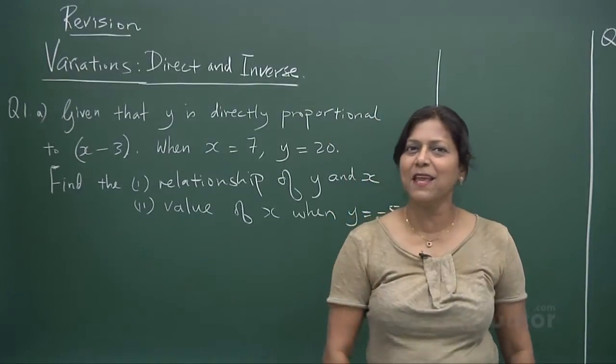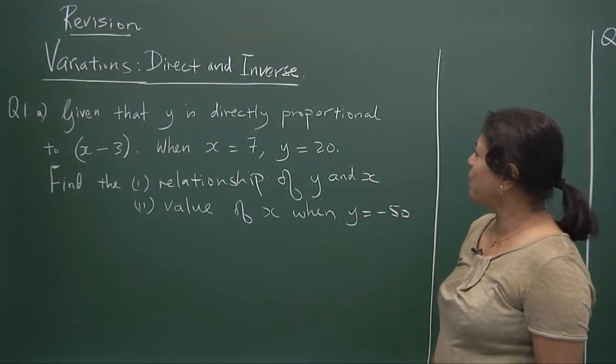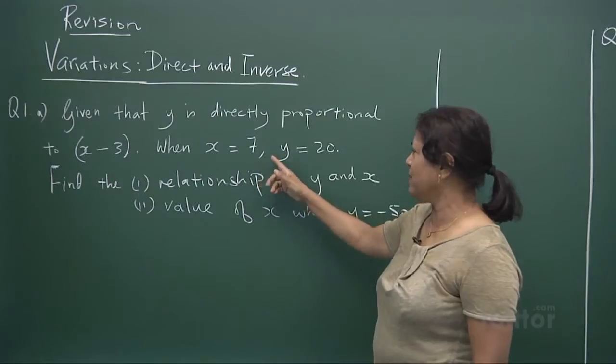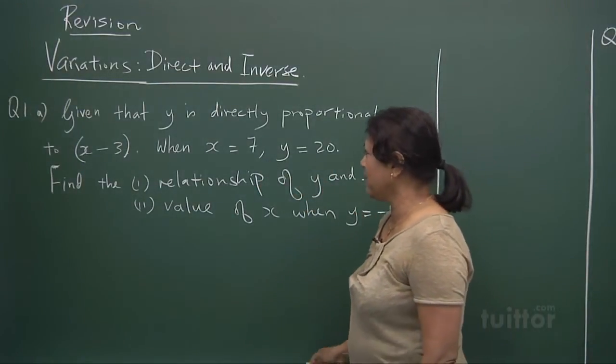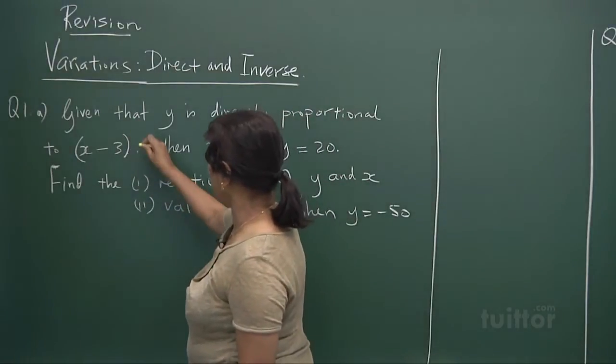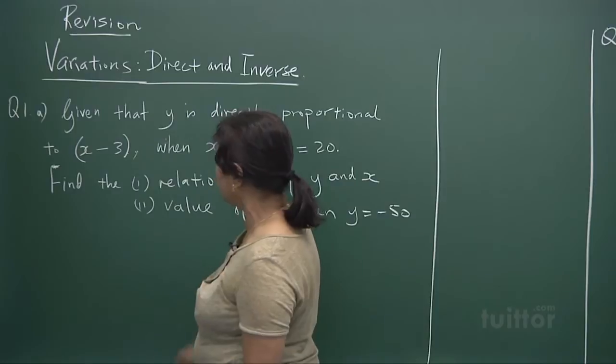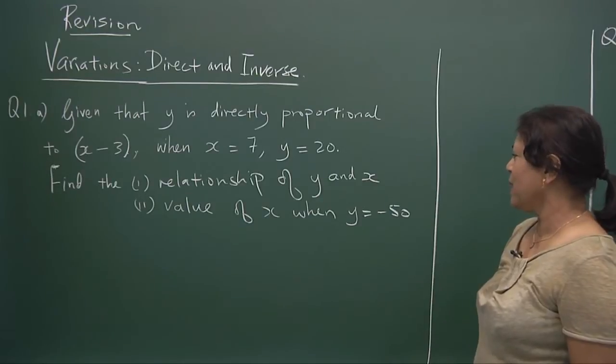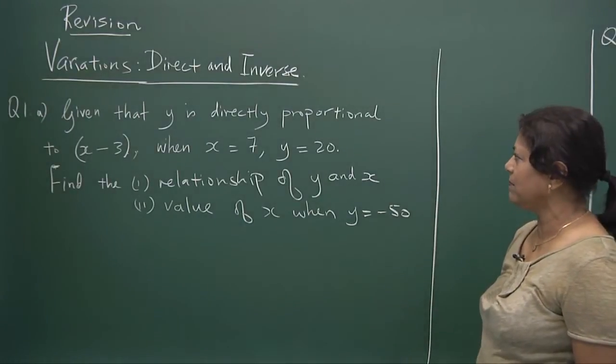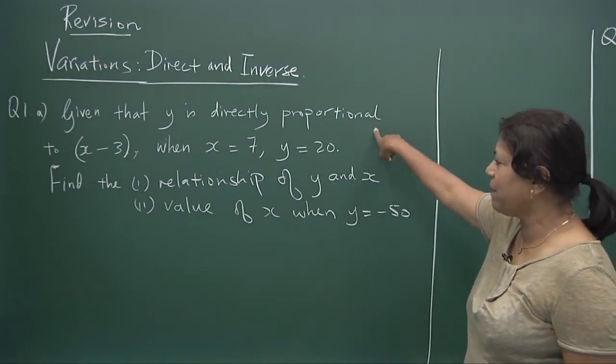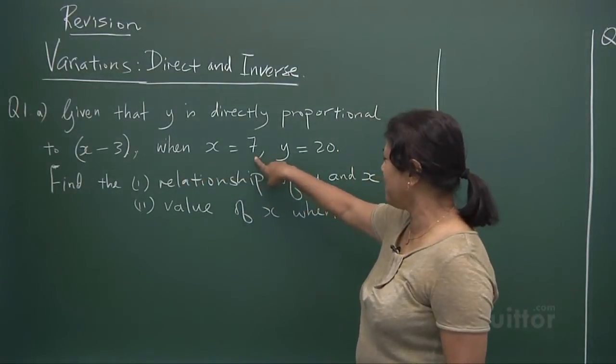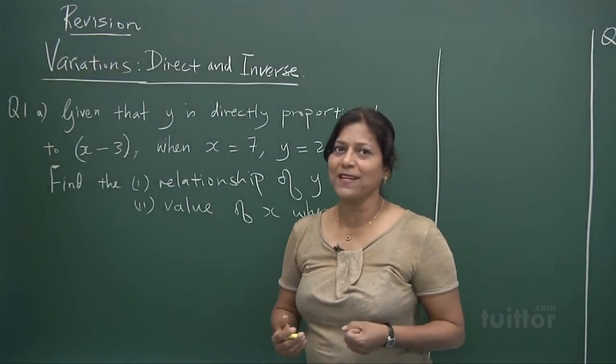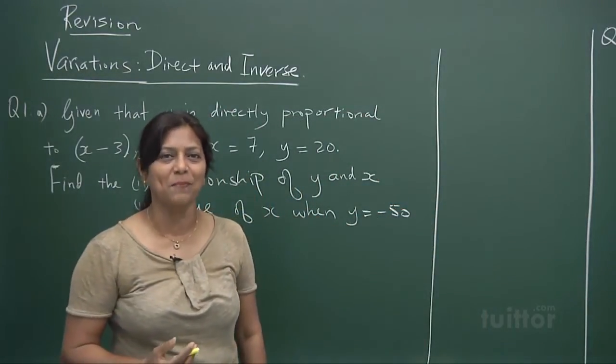Alright, let's jog your memory and see how well you can do them. Now given that y is directly proportional to (x - 3), when x is equal to 7, y is 20. Now I like to put 'given that,' and when you put a given that, I should put a comma here, and this should be a small w. Find the relationship of y and x and the value of x when y is equal to -50. Now when you are given that y is directly proportional to this, when x is 7, y is 20, there is a relationship between x and y, and that's what we call variation.